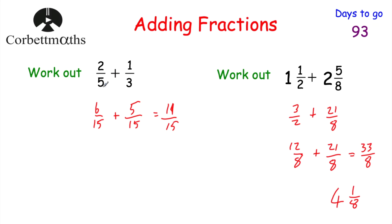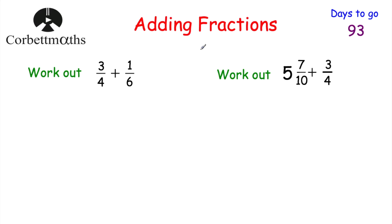Whenever you're adding fractions with different denominators, make sure they've got a common denominator, then add the numerators. If they're mixed numbers, convert them to improper fractions first. Now here are a couple of questions for you to try: work out three quarters plus one sixth, and work out five and seven tenths plus three quarters. Pause the video and give those a try.